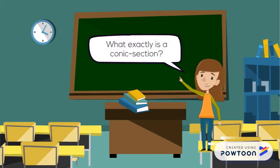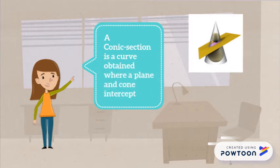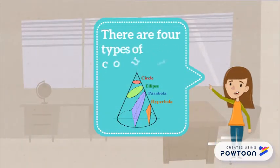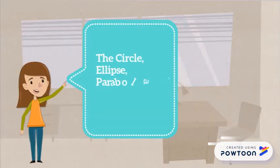What exactly is a conic section? A conic section is a curve obtained where a plane and cone intercept. There are four types of conic sections: the circle, ellipse, parabola, and the hyperbola.